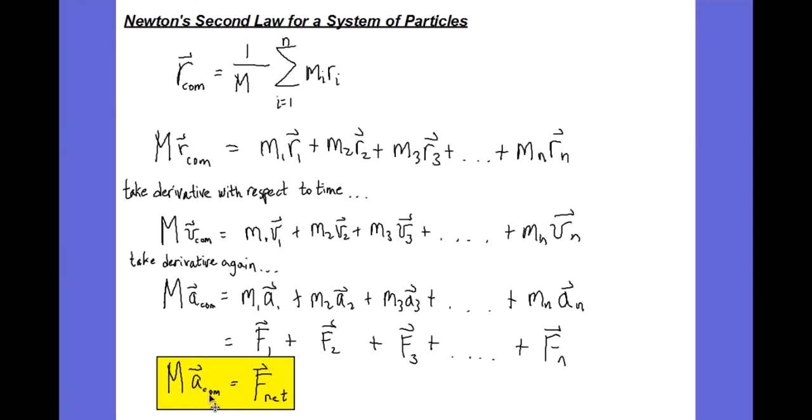Now it is true that there could be nothing there at that location where the center of mass is located. But that spot, that location that describes the center of mass, it will be accelerating. According to Newton's second law, F equals MA.